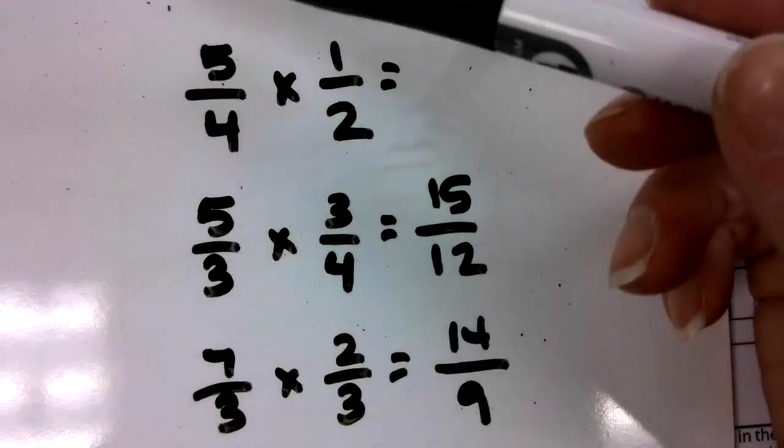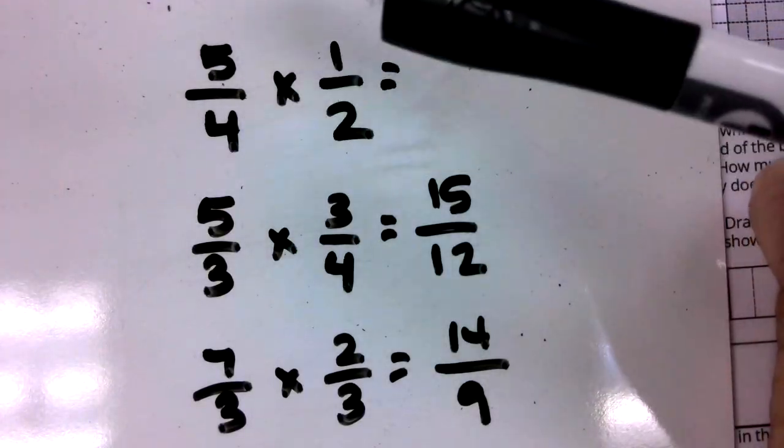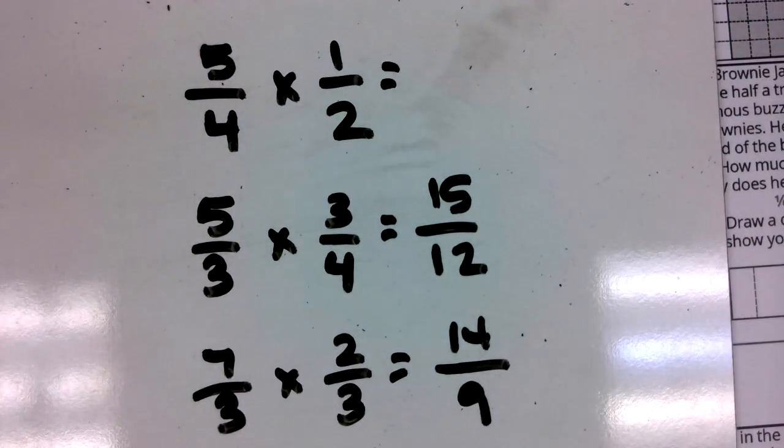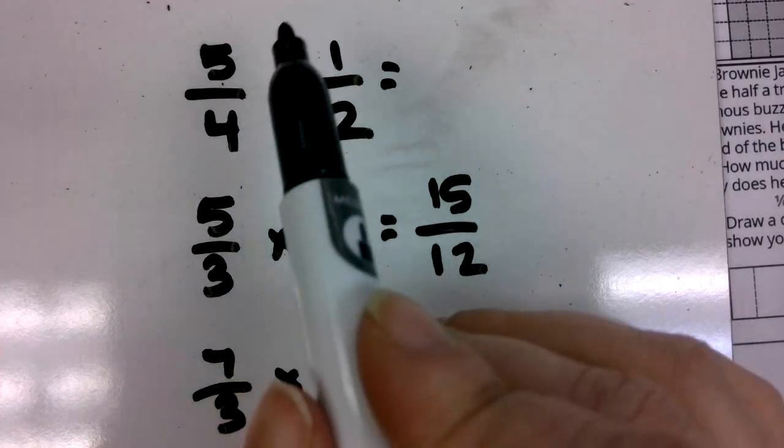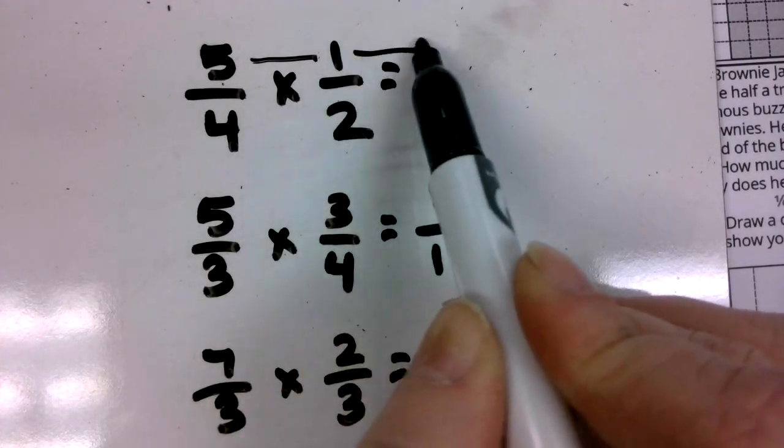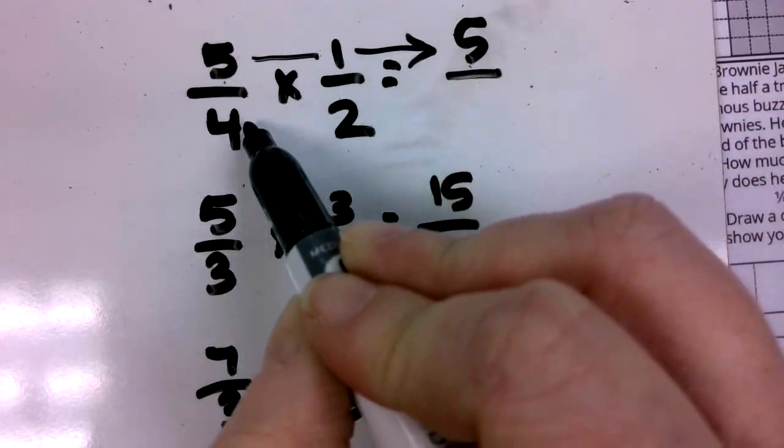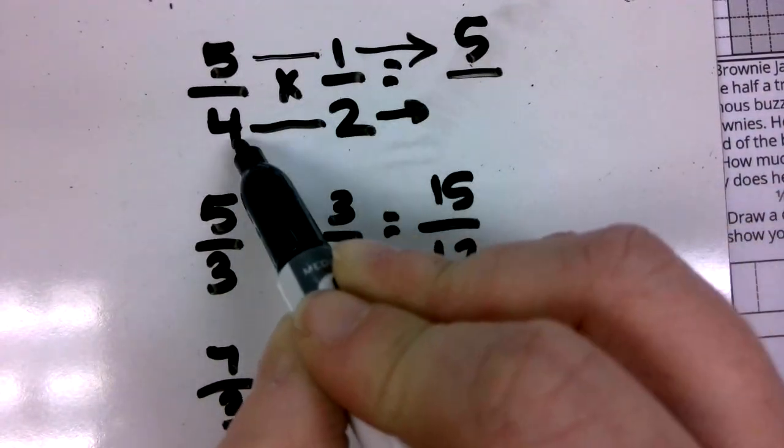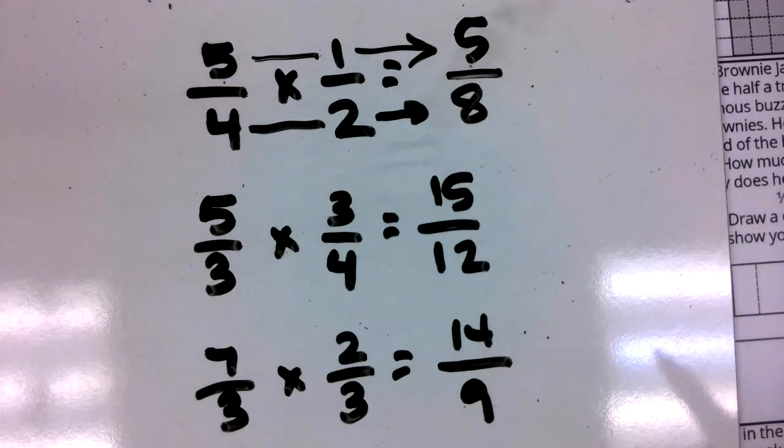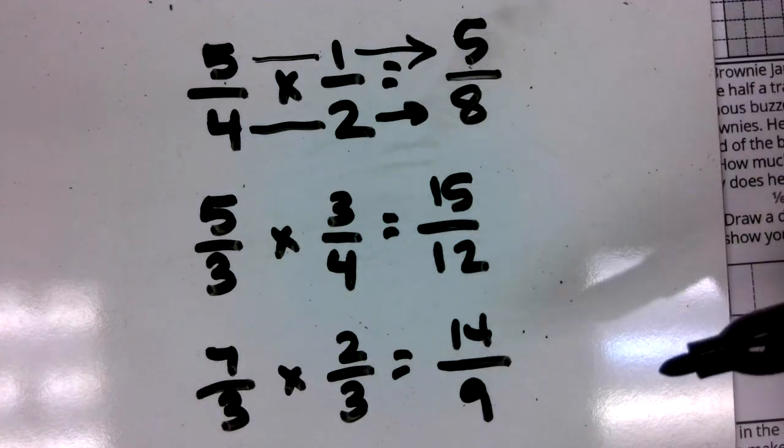Here, boys and girls, we have five-fourths times one-half. We know that to multiply fractions, you can simply multiply your numerators. Five times one is five over, multiply your denominators. Four times two is eight. That is how we get our answer of five-eighths.